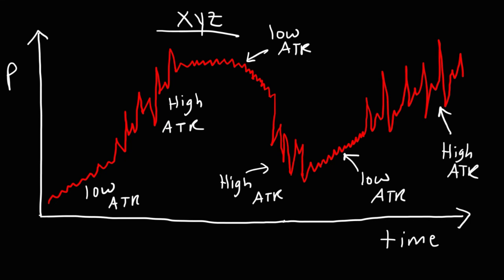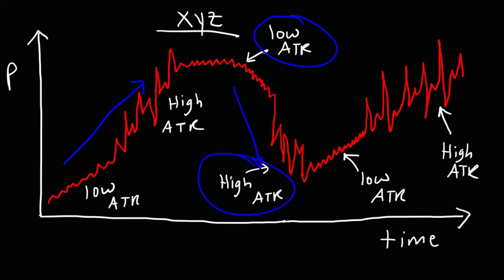Notice that when the stock could be in an uptrend, the ATR could be either low or high. Or the stock could be in a downtrend, and the ATR could also be low or high. So the ATR is an indicator that doesn't tell you the price direction of a stock — it doesn't tell you if it's in an uptrend or a downtrend. What it does tell you is the volatility of a stock — how the stock price changes on a daily basis on average. Where the price doesn't change much, the ATR will be low. Where the daily price is changing a lot, you would expect a high ATR value, which means high volatility.